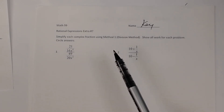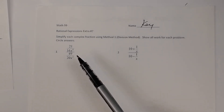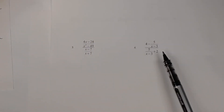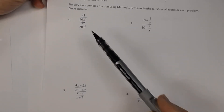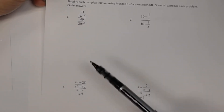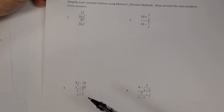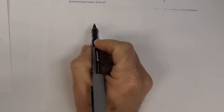Number two, number three, and number one are basically already in that form where you can directly go to the division method. So let's remind you what the division method involves.